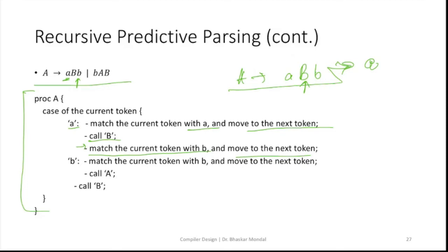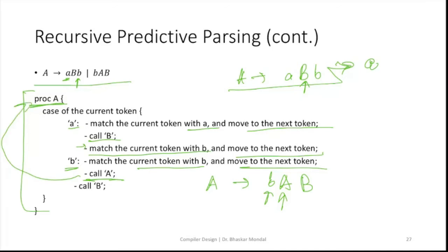If the first token you encounter is small 'b', then we go with the rule B → b A. In this case, we match the current token with b and move to the next token. The next token will be 'a', so it is going to be a recursion — A is called as a procedure and we are already inside procedure A. At the end of the recursion it will stop and call procedure B. This is the reason it is called recursive predictive parsing.